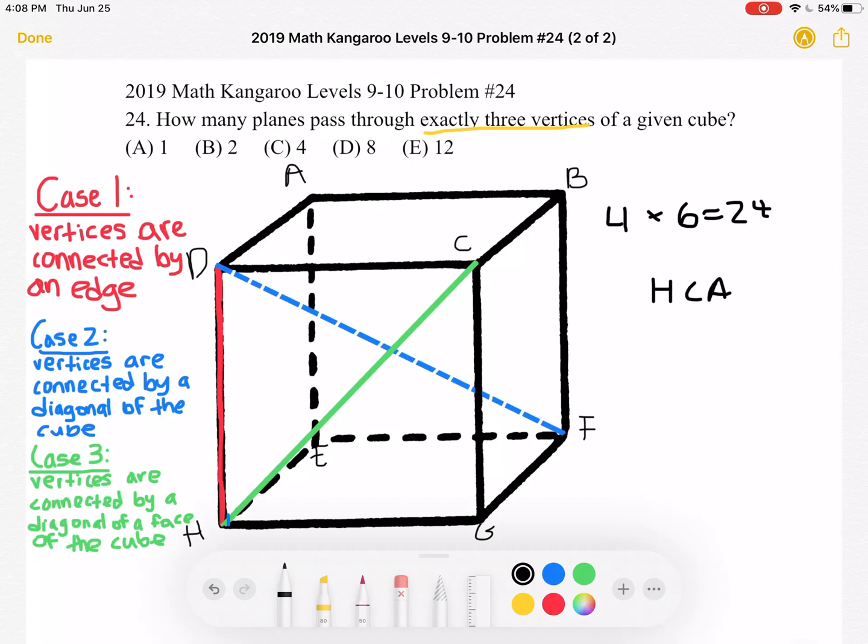But what if we chose face a, b, c, d to have our first two points say a and c and then we connected that to h. So this is the same thing and we also counted a, c, h. We counted it twice so far.